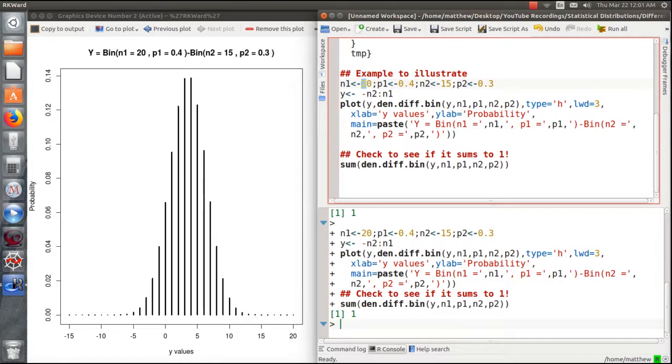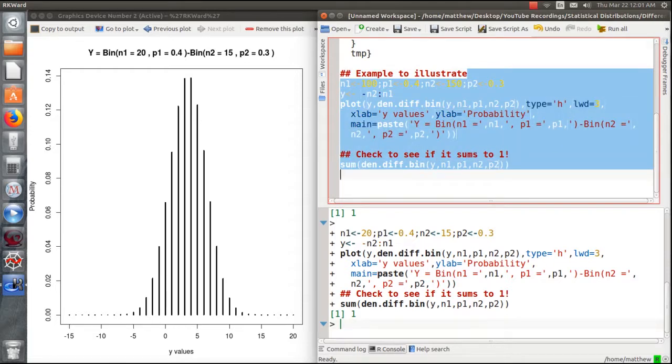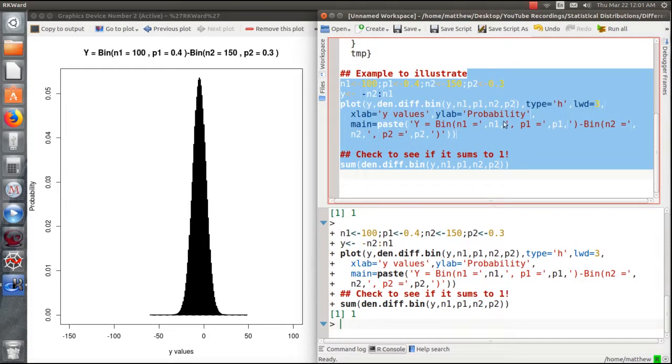And we can do this for any sample size. So let's say this is 100 and this is 150. So there's the density. Now all the bars are right on top of each other. They do sum to one.